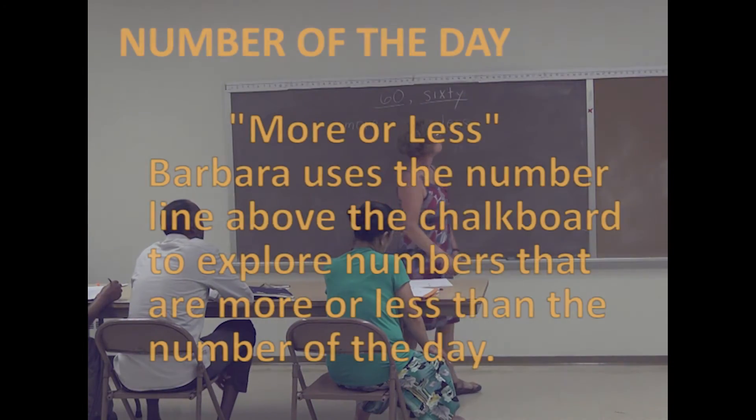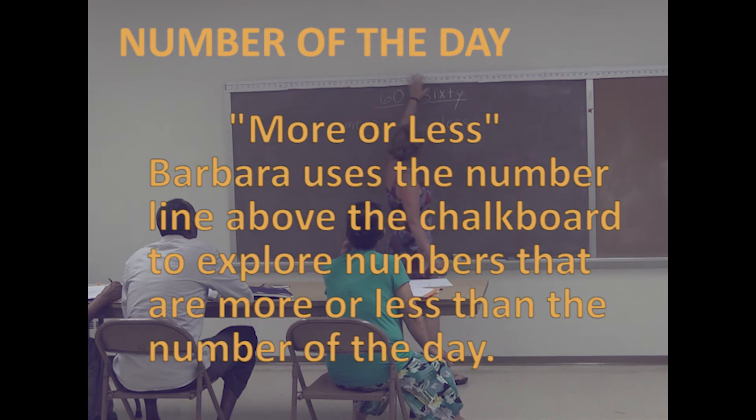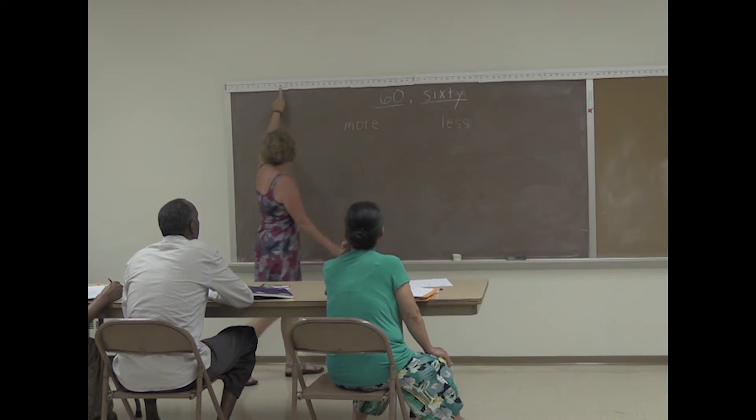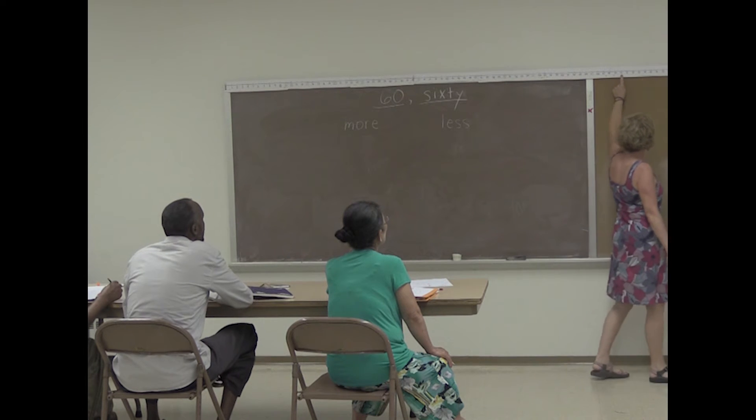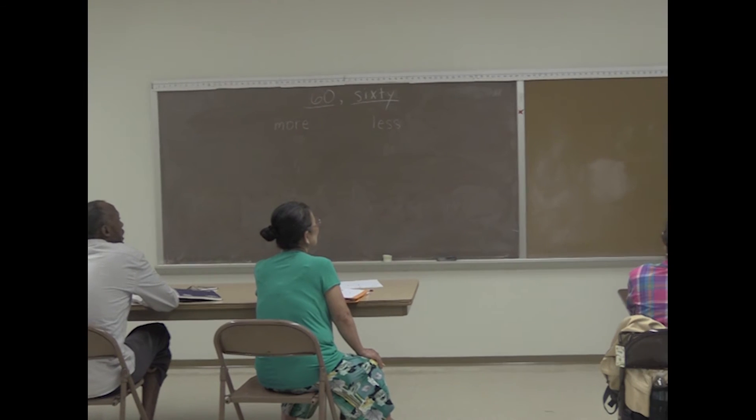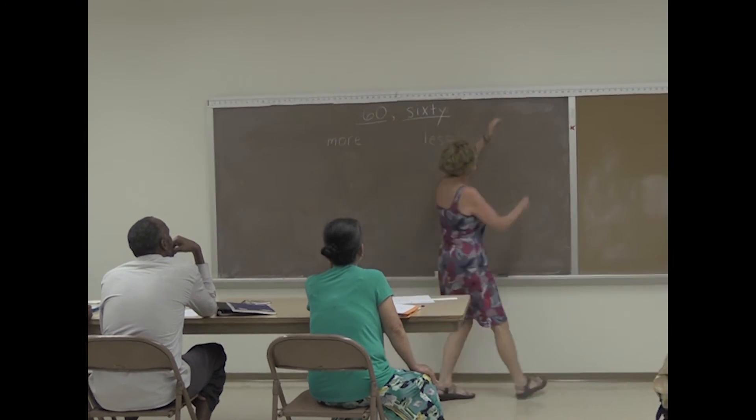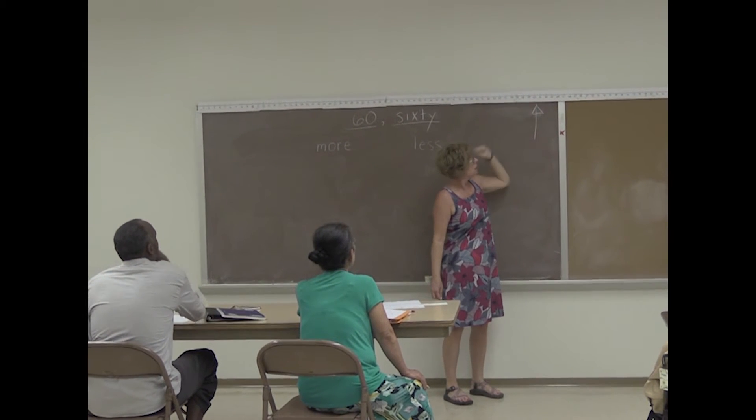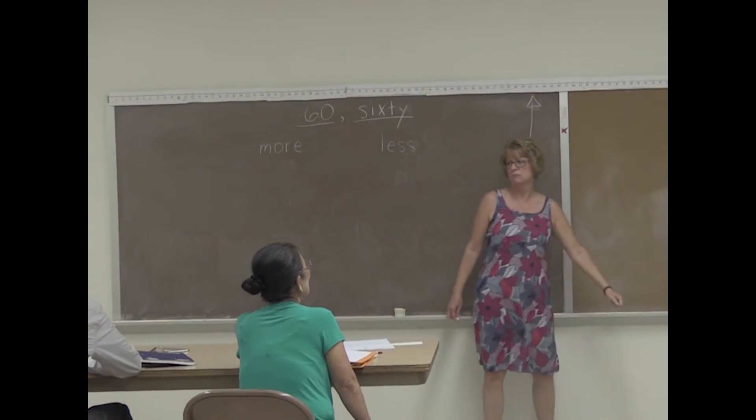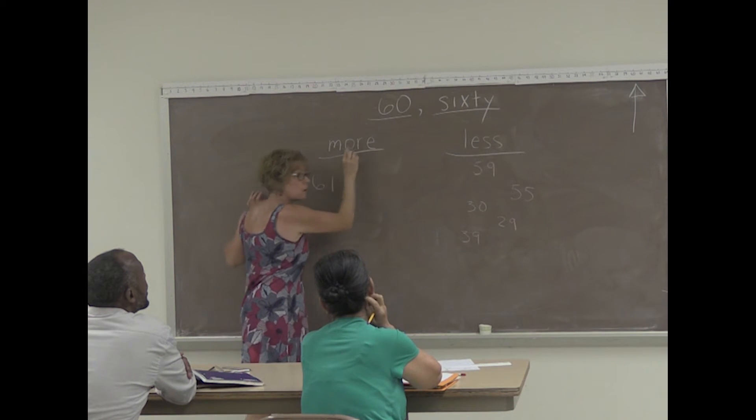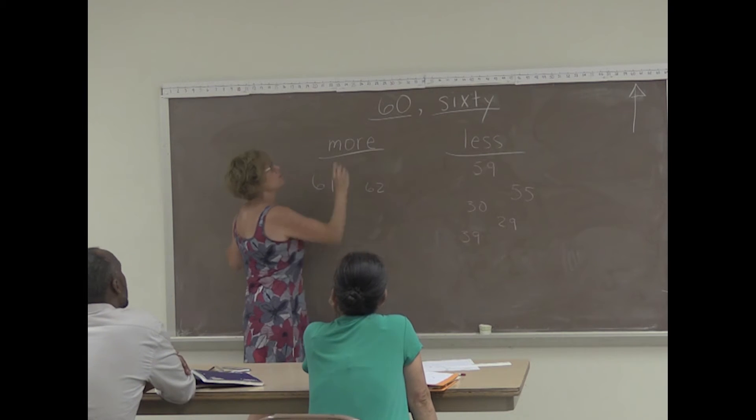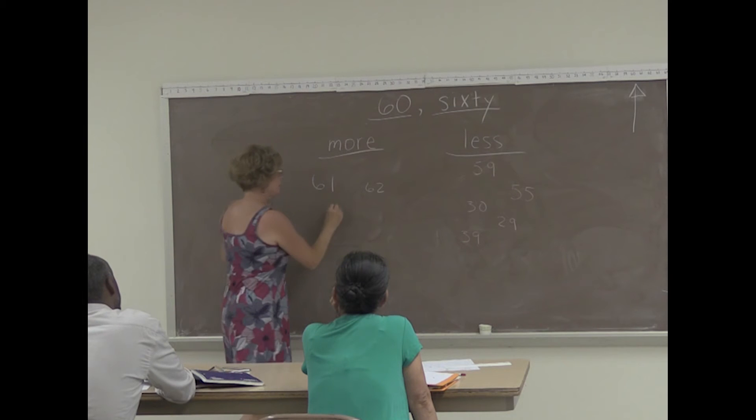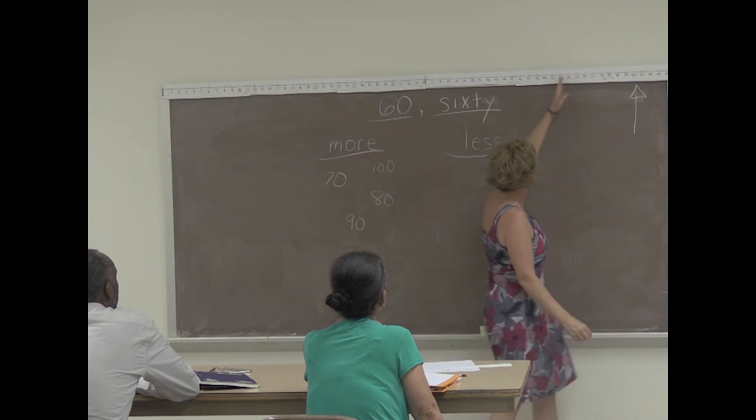More or less. What do you see up here? Do you see numbers? Can you see the red numbers? 10, 20, 30, 40, 50, 60, 70, 80, 90, 100. So, number 60. Did you see it right here? Yes. Is this our number today? Yes. 60. What numbers are more than 60? 61 is more than 60. 62 is more than 60. 74, 70, 64, 75. Right?